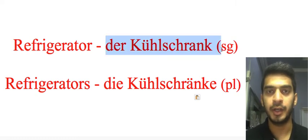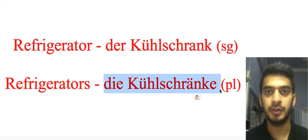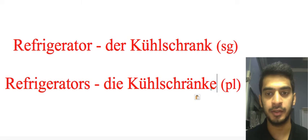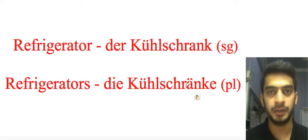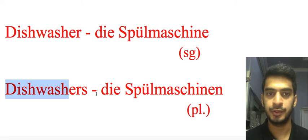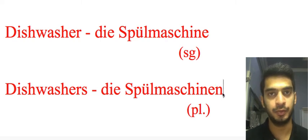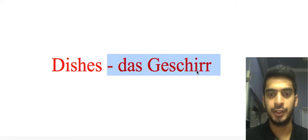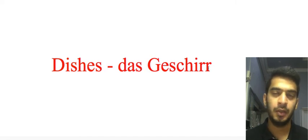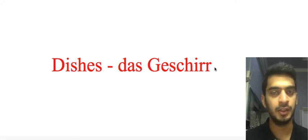'Refrigerator': 'der Kühlschrank' — singular; 'die Kühlschränke' — plural, extra E at the end. 'Dishwasher': 'die Spülmaschine' — singular; 'die Spülmaschinen' — plural, extra N at the end. 'Dishes': 'das Geschirr' — this word cannot be categorized in both singular and plural forms, so we simply call it 'das Geschirr', meaning dishes.